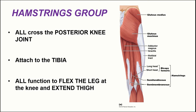Another synergist group is the hamstrings muscle group — three muscles on the posterior thigh, opposite the quadriceps. These are the biceps femoris, which has a long and short head; the semitendinosus, a thin muscle on the medial thigh; and the deeper, broader semimembranosus muscle. This muscle group crosses both the posterior hip and the posterior knee joint, so these muscles have actions at both joints.